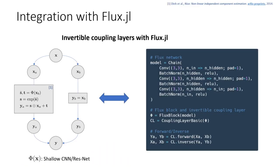One of the main design principles of our framework is that it integrates seamlessly with the existing Julia infrastructure and takes advantage of packages such as Flux. When building invertible coupling layers, the main component is a conventional neural network phi. You can build this network with Flux — for example, a conventional Flux model using convolutional layers and batch norm — and then pass it to our building functions in InvertibleNetworks.jl, which turns that Flux network into an invertible layer with forward, inverse, and gradient functionality.